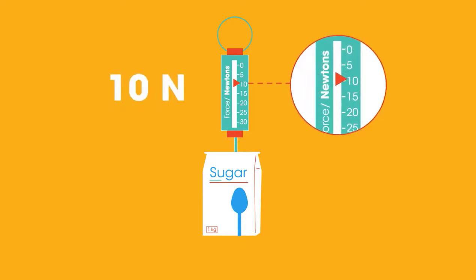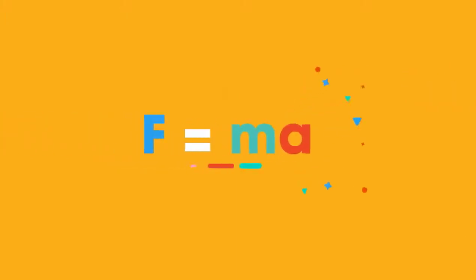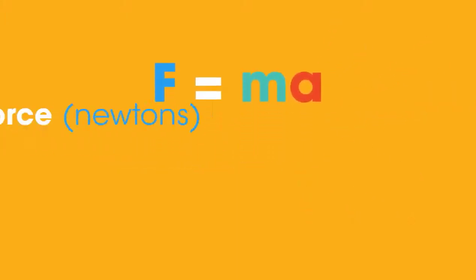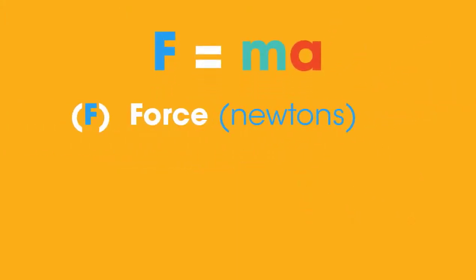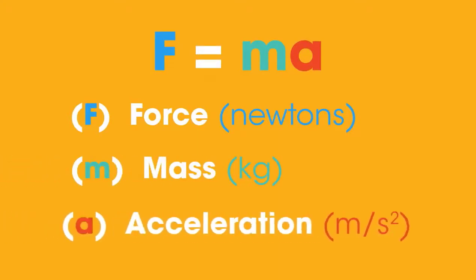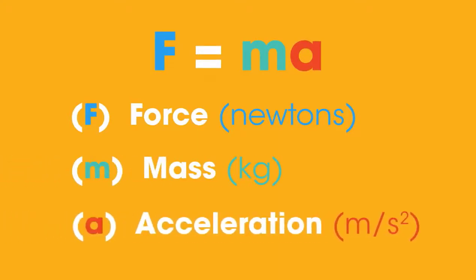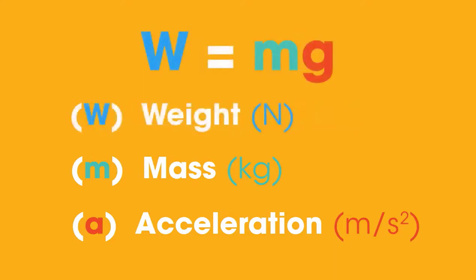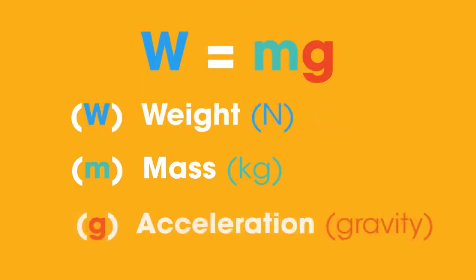Can you remember the equation that links mass with weight? Remember F equals MA, where F is force in newtons, M is mass in kilograms, and A is acceleration in meters per second per second. We can rewrite this a little, as W equals Mg, where W is weight in newtons, and G is acceleration due to gravity.